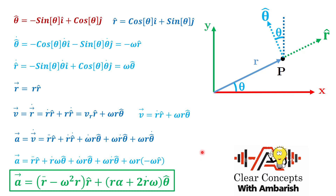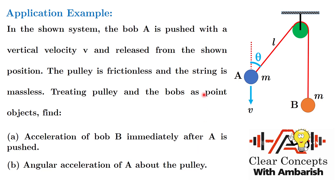Now let's apply this theory through an example. If you don't know the proper theory of Coriolis acceleration, you might make a silly mistake in this problem. In the shown system, a bob A is pushed with a vertical velocity v. It is connected to a string passing over a frictionless pulley, with another bob B on the other side. Bob A is pushed with velocity v and released from the shown position.